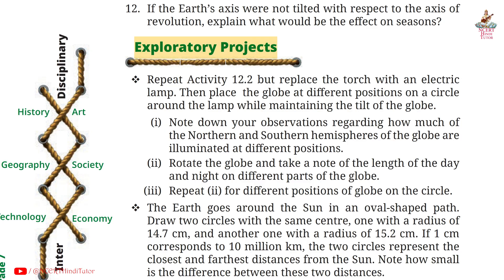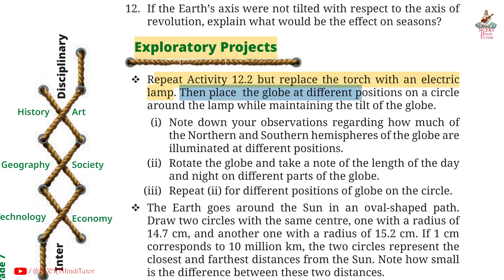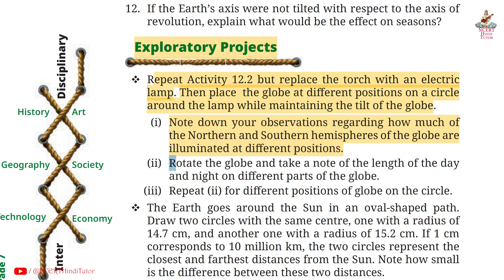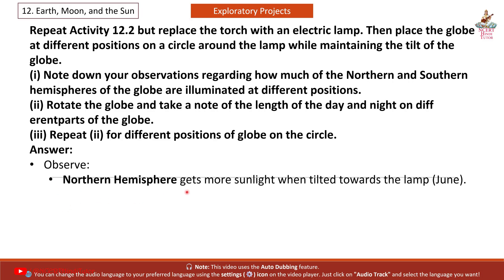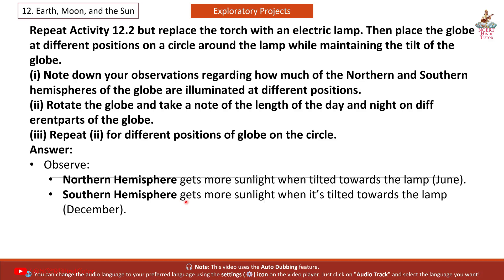Exploratory projects. Repeat activity 12.2, but replace the torch with an electric lamp. Then place the globe at different positions on a circle around the lamp while maintaining the tilt of the globe. First, note down your observations regarding how much of the Northern and Southern hemispheres of the globe are illuminated at different positions. Second, rotate the globe and take note of the length of day and night on different parts of the globe. Third, repeat the second step for different positions of the globe on the circle.